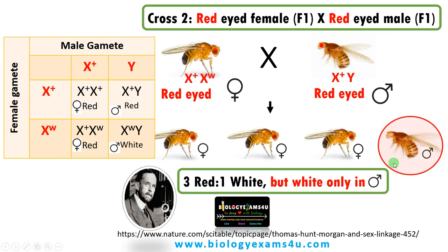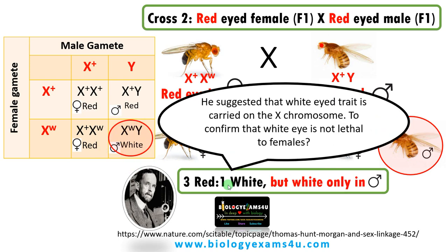The white-eyed male fly had genotype X^W Y. Morgan suggested that the white-eyed trait is carried on the X chromosome, which is why it appeared only in males. But there was one more problem: among all these offspring, there were no white-eyed females. So was white eye lethal to females? He wanted to confirm this.